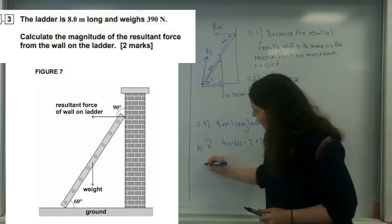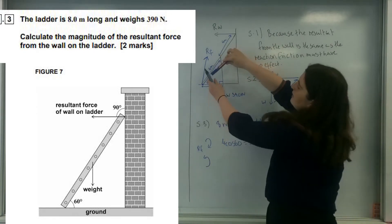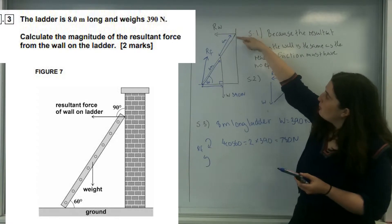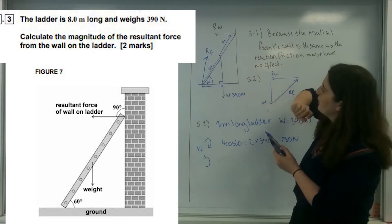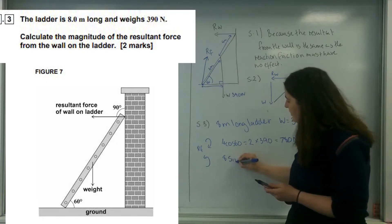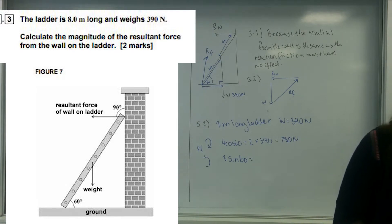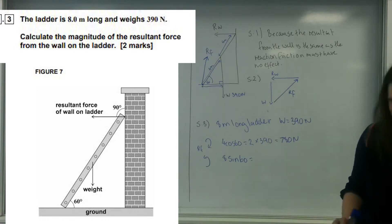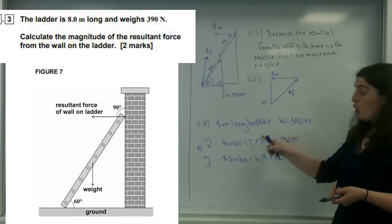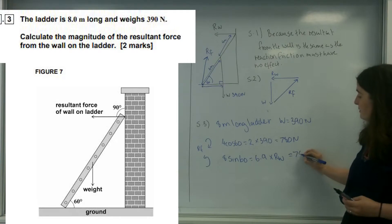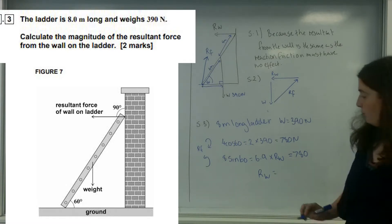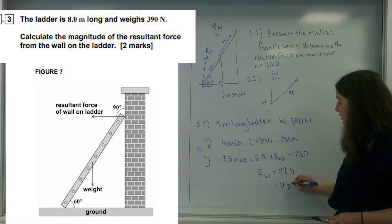Now if I go anticlockwise, this force is not perpendicular with this distance either. So I need to find the perpendicular distance from the pivot, which is going to be 8 sin 60, which equals 6.9. I'm going to multiply that by my R at the wall. If this is in equilibrium, the clockwise moment must equal the anticlockwise moment, so that must be 780. So the reaction at the wall — the resultant at the wall — is 780 divided by 6.9, which is approximately 113 newtons.